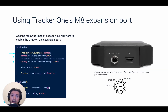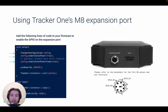I'd also like to call out the following consideration when working with TrackerOne. In order to use the GPIO in the expansion port, you first need to enable the CAN bus power, even if you're not using CAN. This is easily done via the Tracker configuration object, and you only need to do this once during setup.